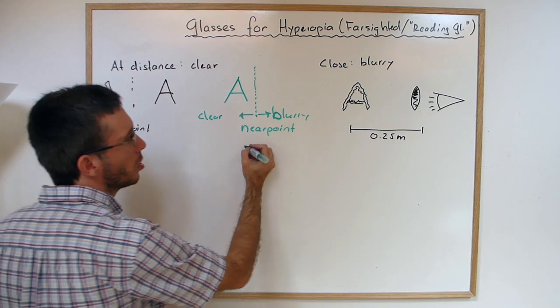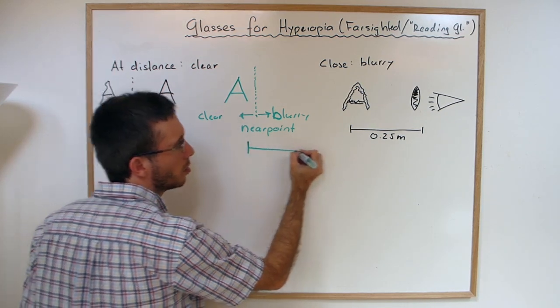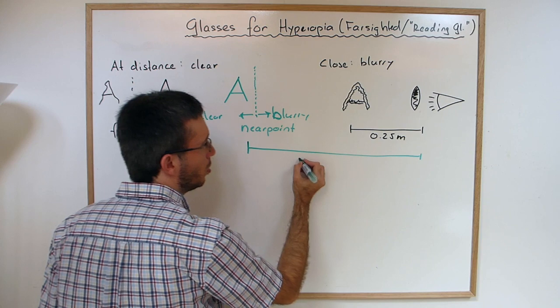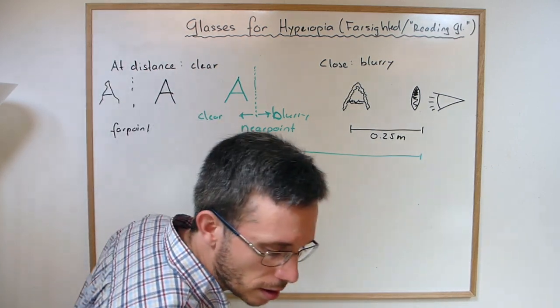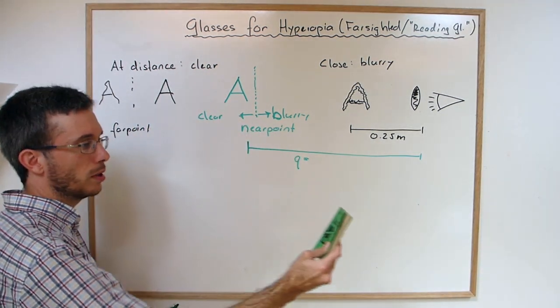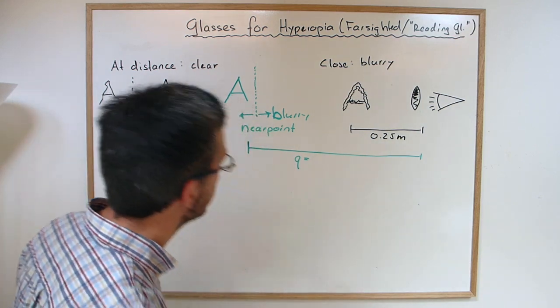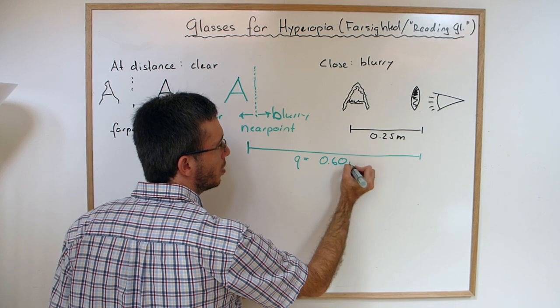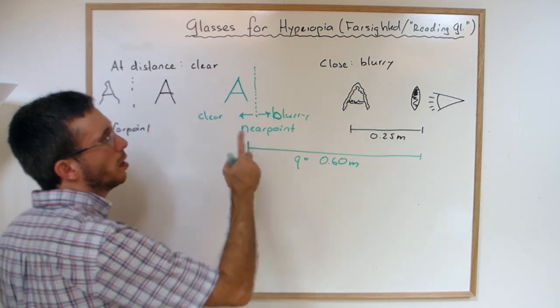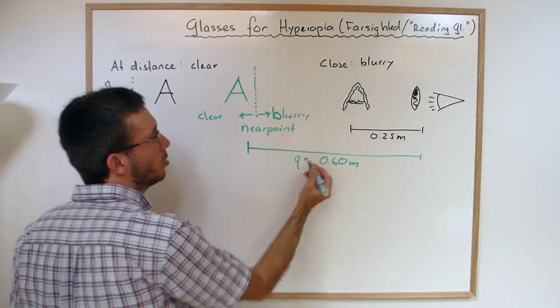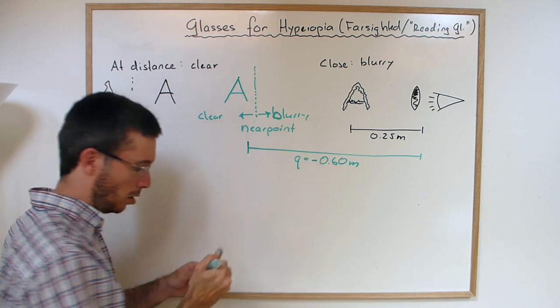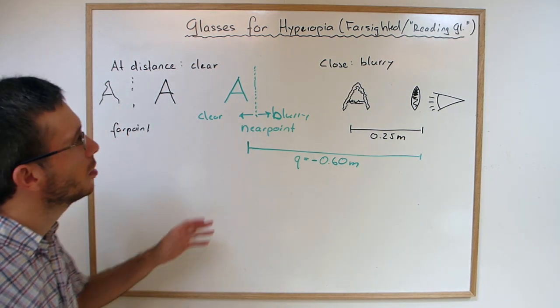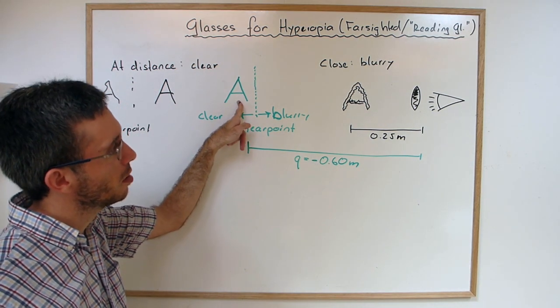We need an image at the near point distance. So Q, let's assume somebody was testing it and once the book is, let's say 60 centimeters away, 0.60 meters, they see clearly. Again, I'm creating a virtual image, so here must be a minus in front of it. The image is not a real image, it's a virtual image.